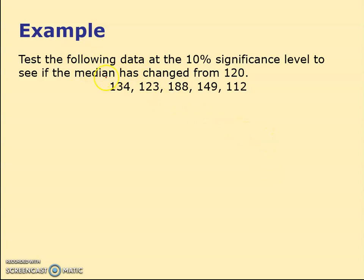Test the following data at the 10% significance level to see if the median has changed from 120. I've got five numbers which I'm going to test to see whether they're significantly different from 120. First, I need to set out hypotheses properly. My null hypothesis is median equals 120.